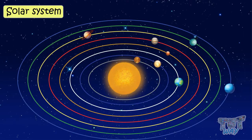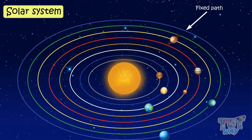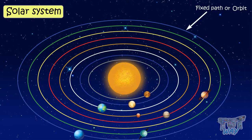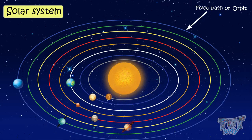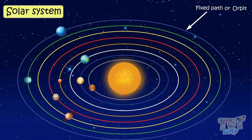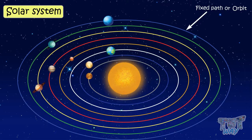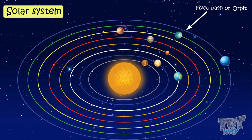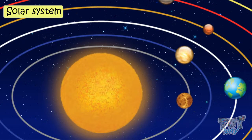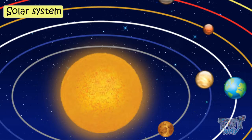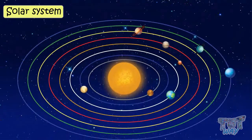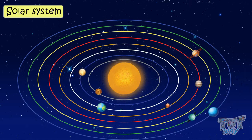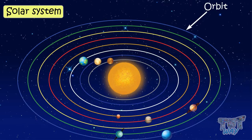They all revolve around the sun in fixed paths called orbits. Orbit is a fixed path on which a planet revolves. Each planet has its own orbit. Like Mercury will move only on this orbit. Venus will move only on this orbit. Likewise, all planets move in their fixed paths called orbits. They never move out of their path.